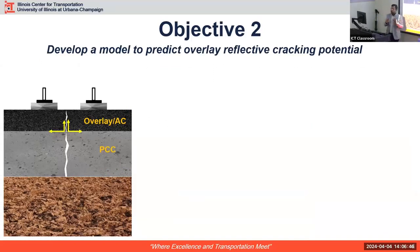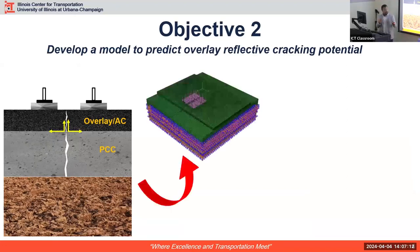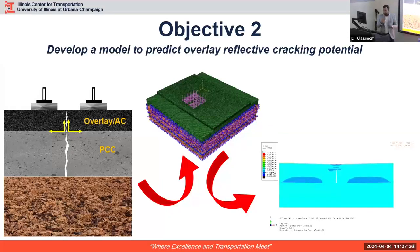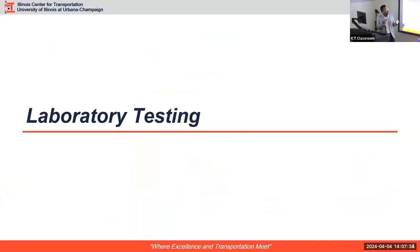The second objective is: once you identify optimal configurations from experiments, you cannot keep running tests for every new scenario — it's extremely time consuming and expensive. So the second objective is to model those experiments, validate against experimental data, and then use that validated model to predict overlay cracking potential. In today's talk we will mainly focus on how we develop this model and how we validate it, but first I'll briefly introduce the laboratory testing part.